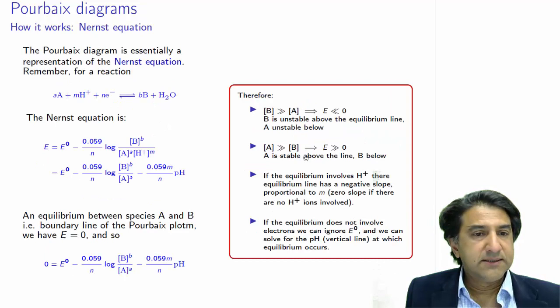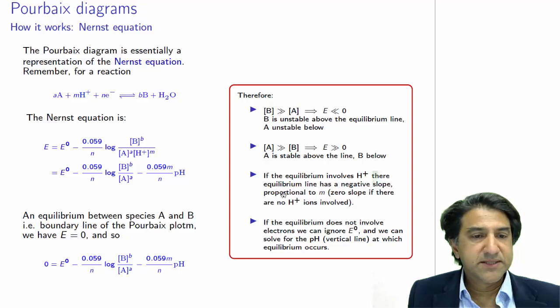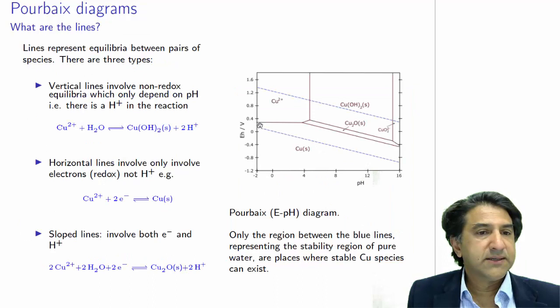OK. If the equilibrium involves H plus, the equilibrium line has a negative slope. Well, we saw that at the very first thing. But there's something else to mention. If the equilibrium doesn't involve H plus, if M is 0, 0 times H plus gives us 0, then the slope of this line is 0. And that's what we see here. The slope of this line is 0. It's not negative. It's not positive. Sorry. The slope of this line is actually infinity. It doesn't really have a slope.